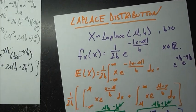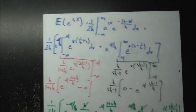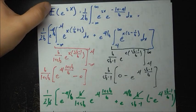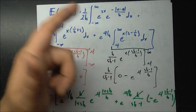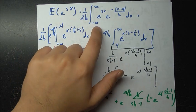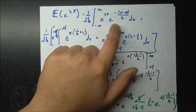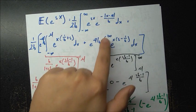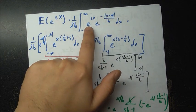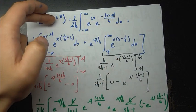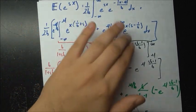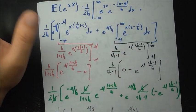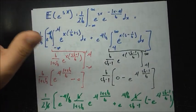The next thing we need to do is find the moment generating function, and that turns out not to be so bad. By definition, we need E[e to the sx]. I pull the 1 over 2b out, keep the absolute value form while integrating over the whole real line, and then split into two integrals to eliminate the absolute values. I also pull out the constants e to the minus mu over b and e to the mu over b.